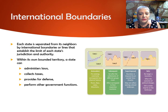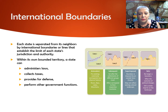The disintegration of states, including the Soviet Union and Yugoslavia into multiple smaller states, has created new international boundaries within pre-existing boundaries. While the German unification in 1991 involved the dissolution of a boundary that had divided Europe for decades. Those are called relic boundaries.